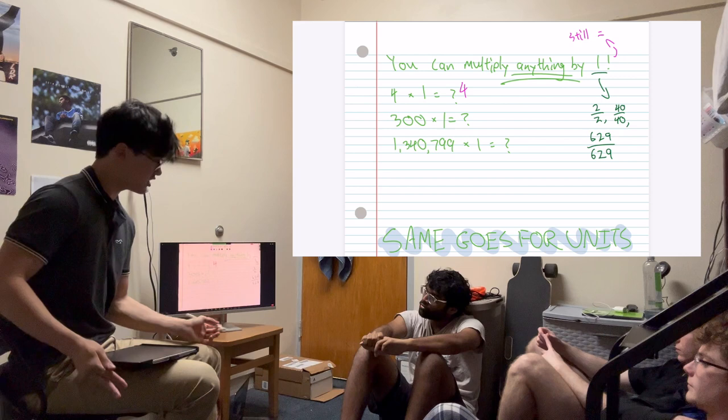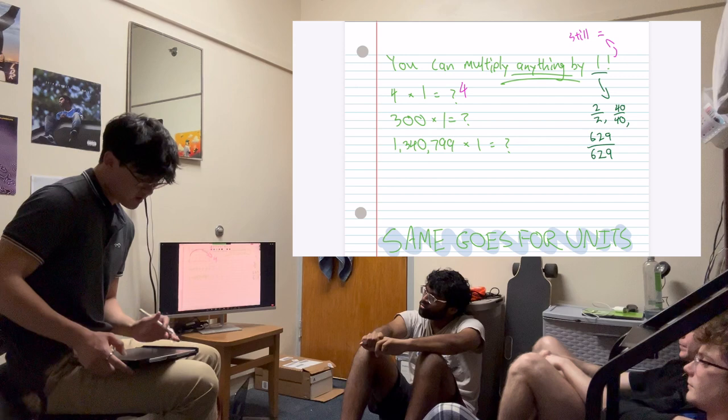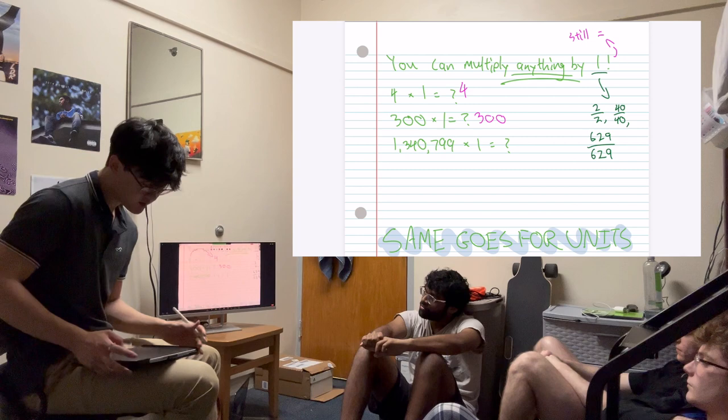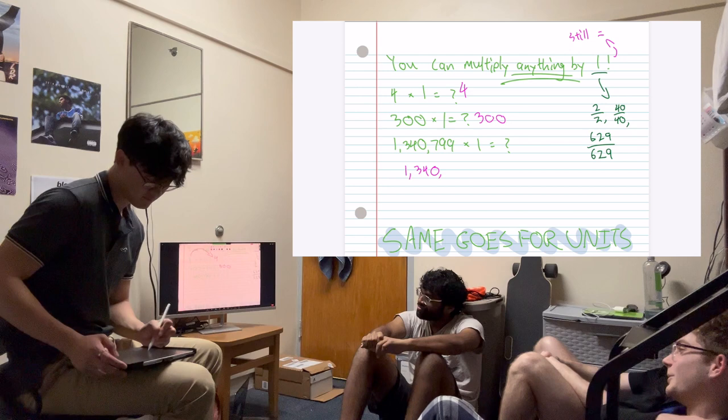So 4 times 1 just turns into 4. You can literally just rewrite and copy this. 300 times 1 is? 300. Nice. And 1,340,799 times 1 is? 1,340,799. Nice, nice. It's a big number.